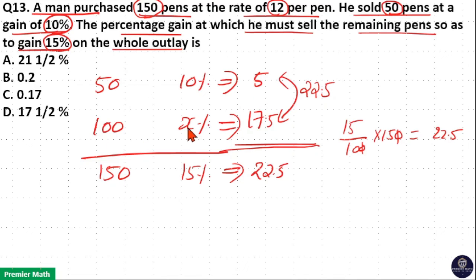So, the value of x is equal to 17.5. That is, x percentage is 17.5 percentage. Option D is your answer. That is, he should sell 100 pens at 17.5 percentage profit.